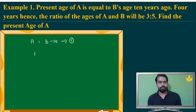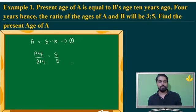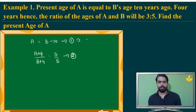4 years hence, that means after 4 years, the age ratio becomes 3 is to 5. But you need to understand the difference between ages will always be constant. To find the age of A, I am going to re-modify this equation as B is equal to A plus 10 and substitute in the second equation.